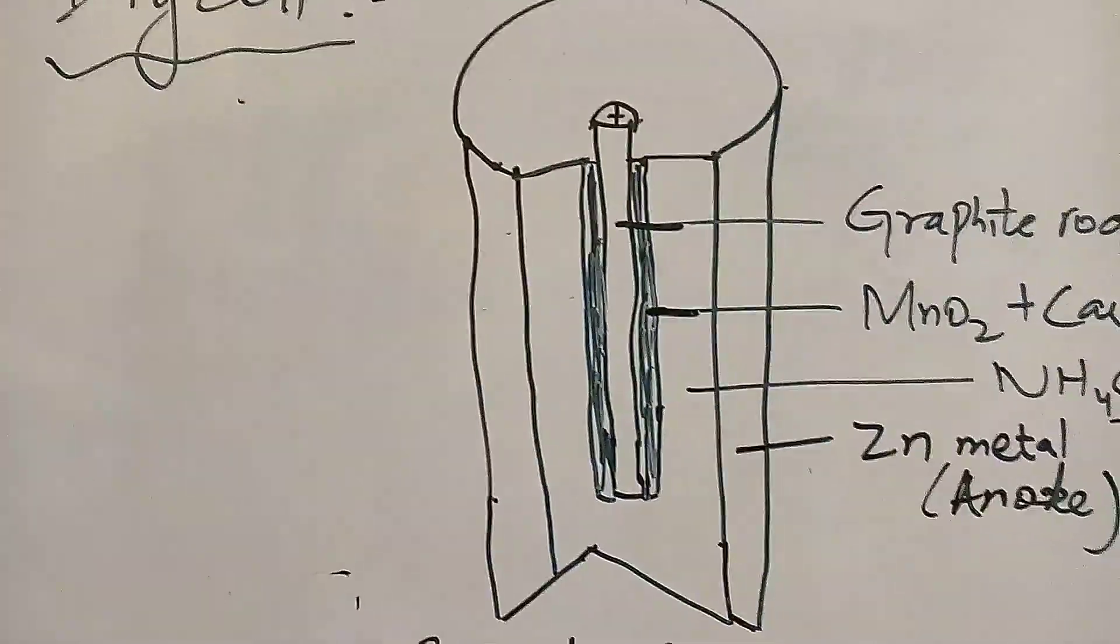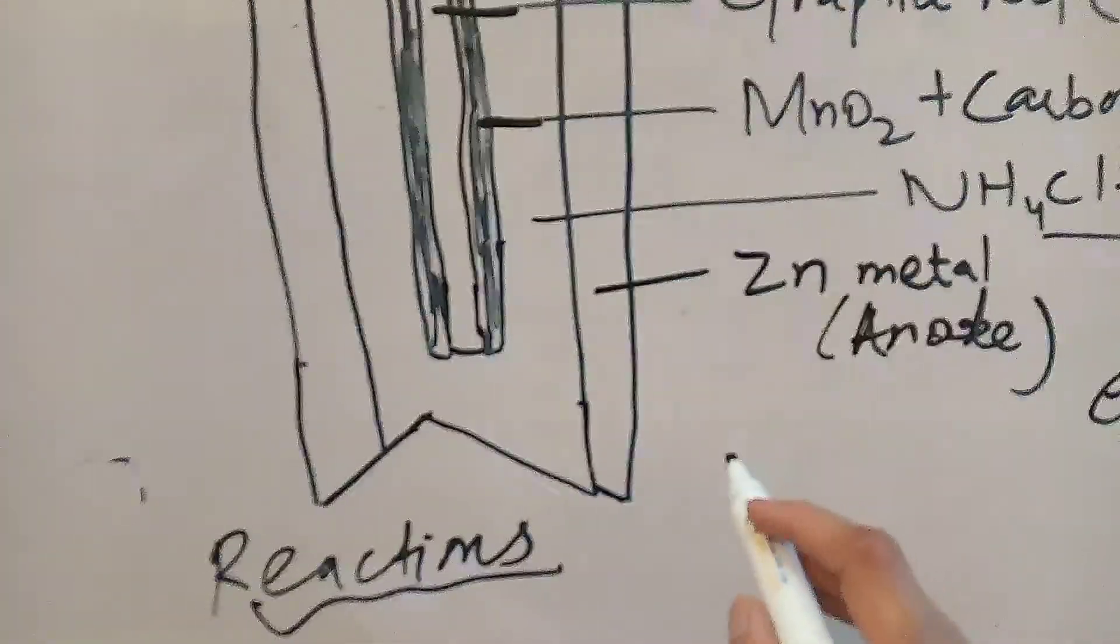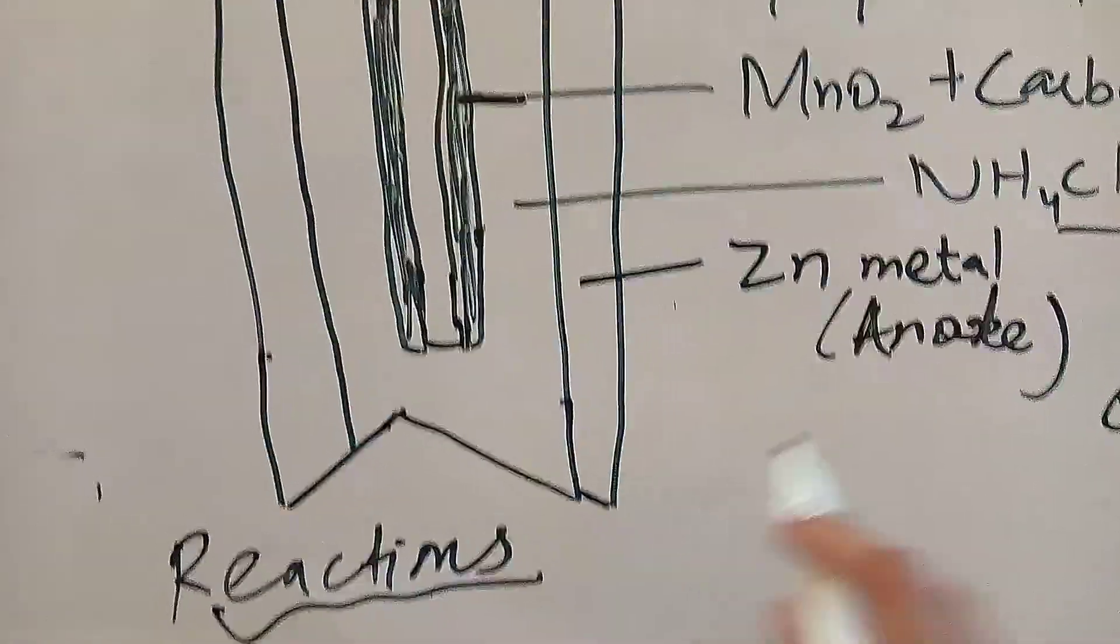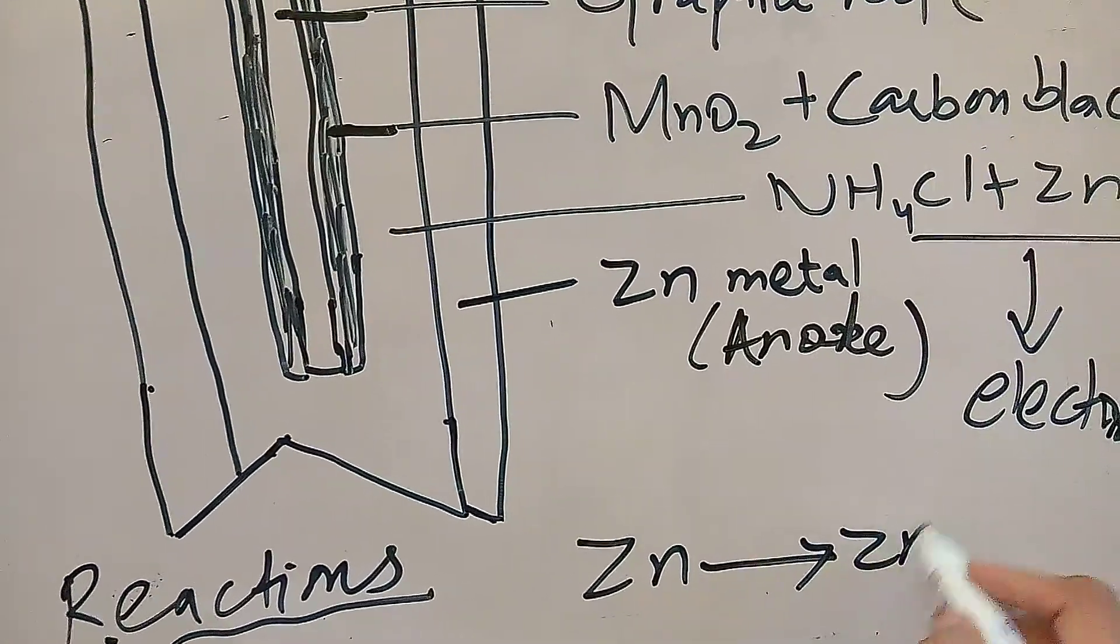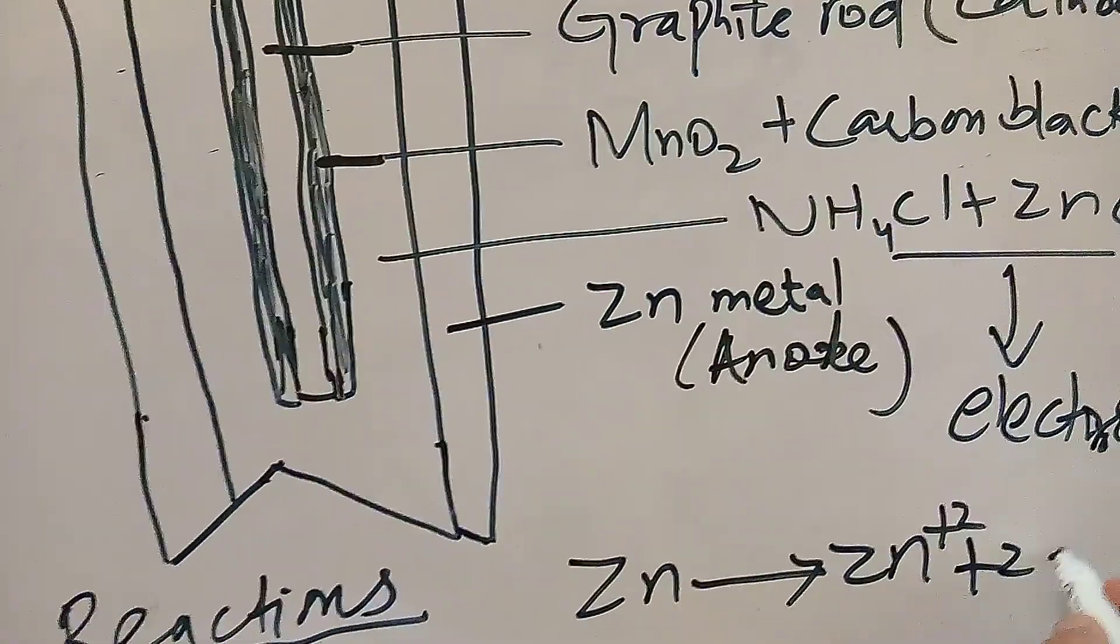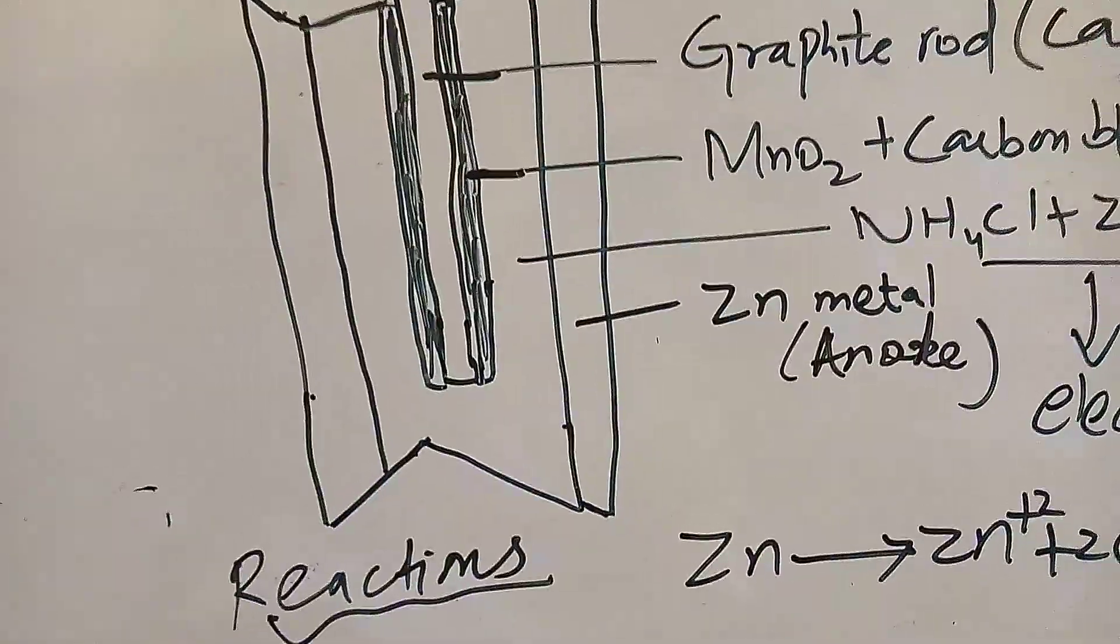The reactions that are basically inside are anode and oxidation. Anode is a zinc metal container. It will lose its electrons. When the electron is lost, it will be converted into zinc 2+ ions.